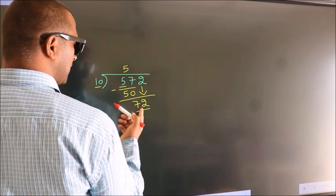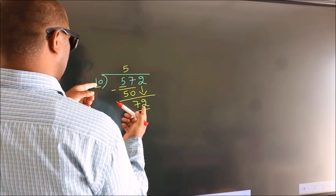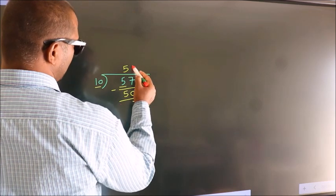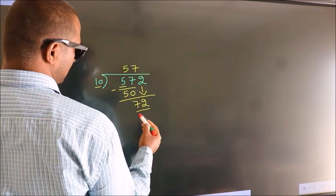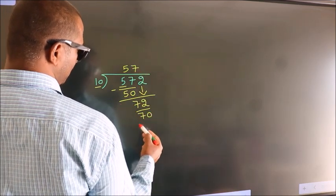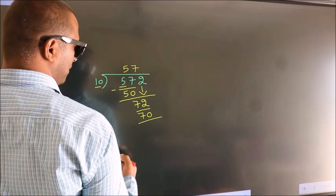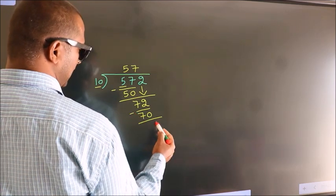A number close to 72 in the 10 table is 10 sevens, 70. Now we subtract, we get 2.